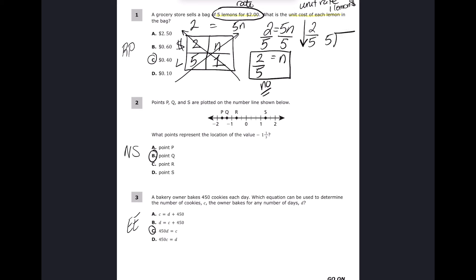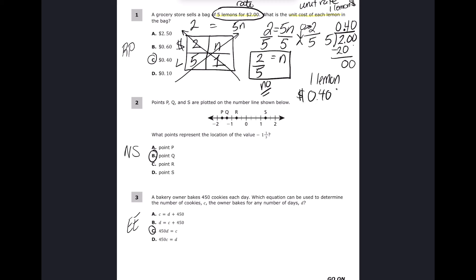I read the fraction top to bottom: two divided by five. Some kids like to imagine the two falling inside the house — the five stays and the two falls in. Now, five cannot go into two, but it goes into 20 four times with zero left, so one lemon is 40 cents. The answer is C.